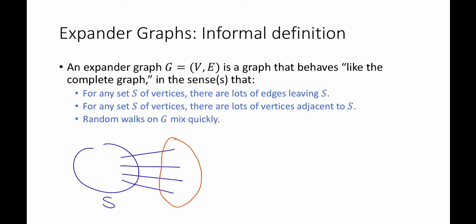The third sense is that random walks on this graph are going to mix quickly. That is, if I start at some vertex here and I just pick random edges and keep walking, then after not too long, this is going to be close to uniform.